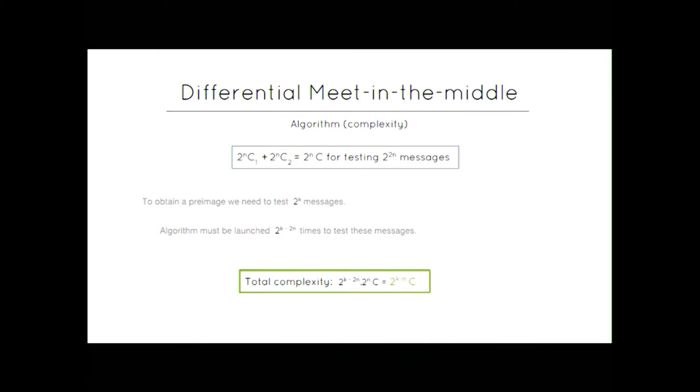Therefore, you will have to launch again and again your algorithm and you have to launch it 2^(k-2n) times. Therefore, the final complexity of the attack you mount is 2^(k-n) multiplied by the cost of one call to the compression function.